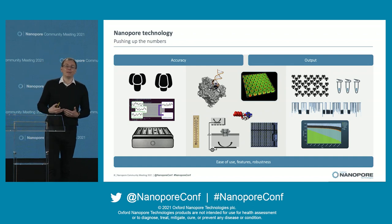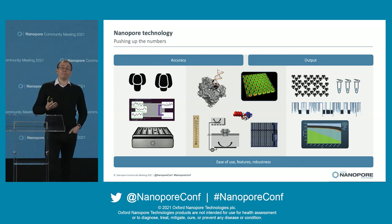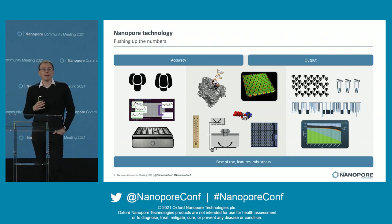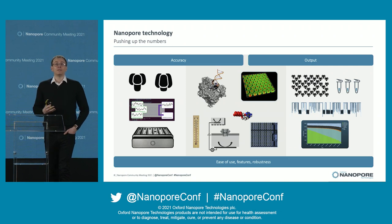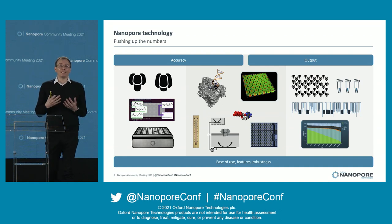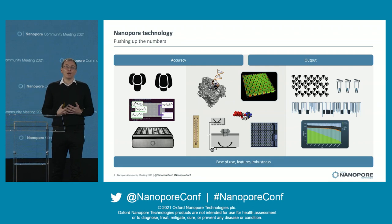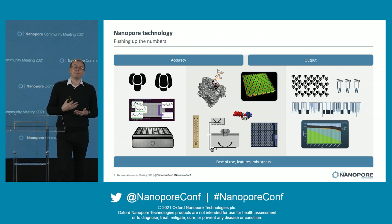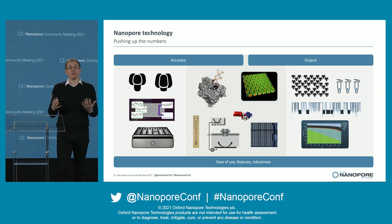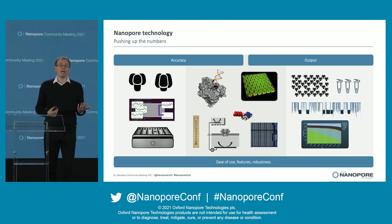Moving on to output. Output is really about the number of nanopores you have, with the maximum determined by the ASIC. We then layer on the chemistry, the membranes, and insert pores — all with yields that have been improving steadily. How you utilize those nanopores determines your output: speed is a key factor, and you want a well-adapted library. You want to use as much time as possible in a sequencing state and not in open pore — you can see in this diagram that perhaps a third of the time is spent in the lower level, so more output could be gained from this run by adding a bit more sample.